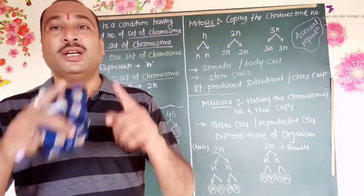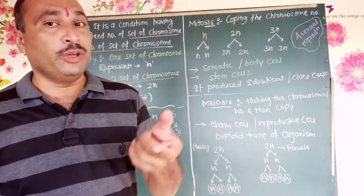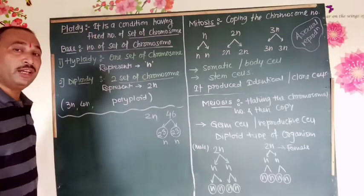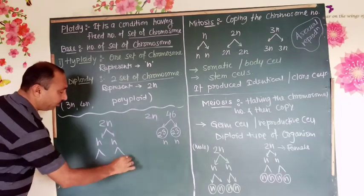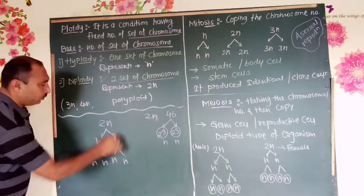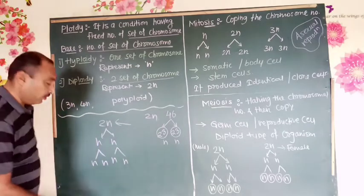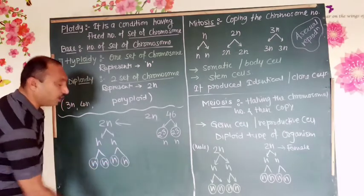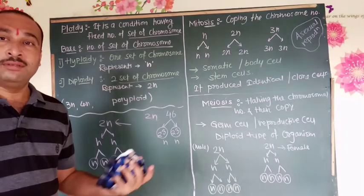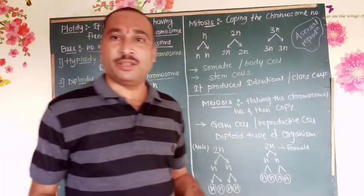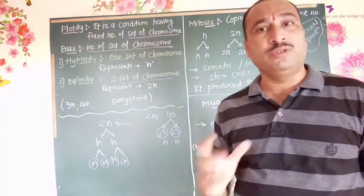The diploid cell is first split into haploid form, then the haploid is copied. So the diploid cell divides into four haploid cells, and those cells are simply called gametes. So in meiosis there are two steps: first halving (2N to N), then copying. That is the basic point regarding cell division.